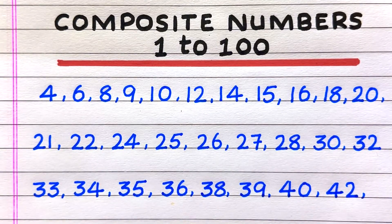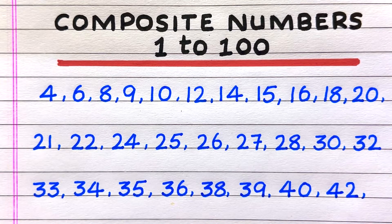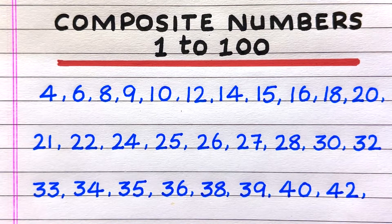First composite number is 4. Next: 6, 8, 9, 10, 12, 14, 15, 16, 18, 20, 21, 22, 24, 25, 26, 27, 28, 30, 32.